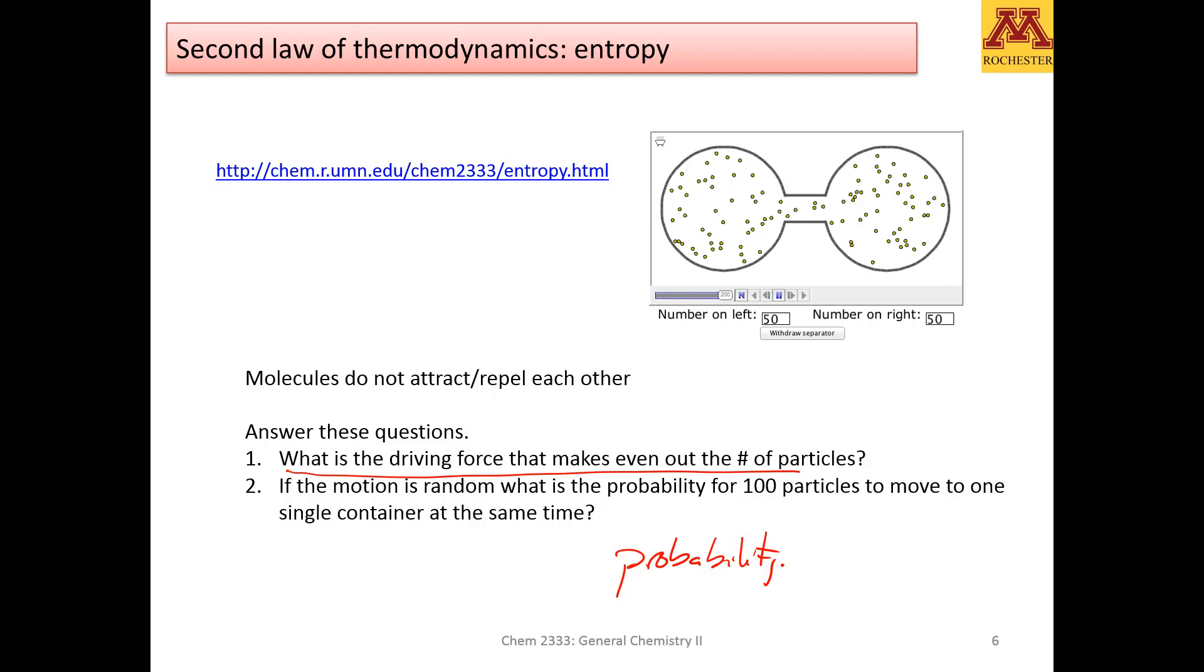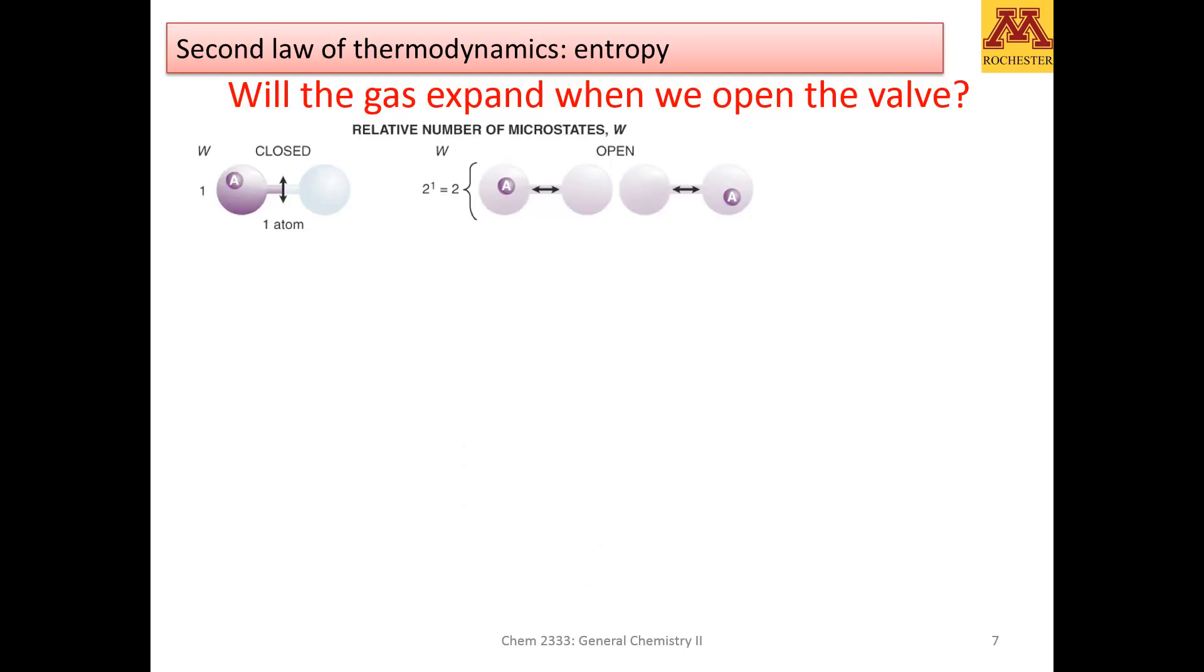In other words, the tendency for nature to change towards states where there is a higher distribution of particles and a more spread distribution of energy boils down to the idea that those states are more probable. Let's try to describe that with a little bit of statistics.